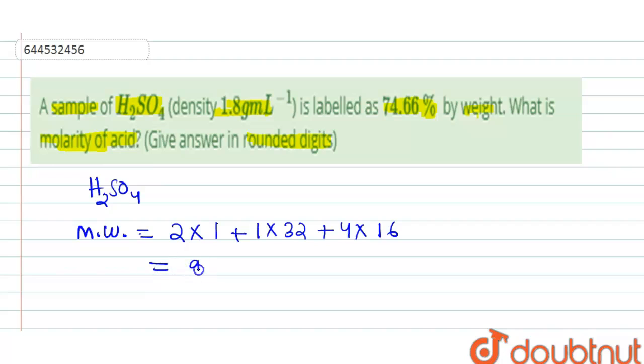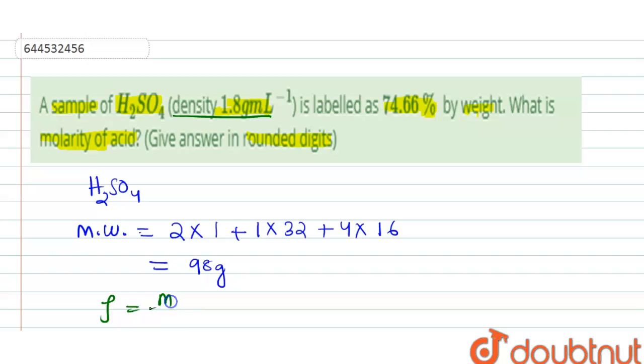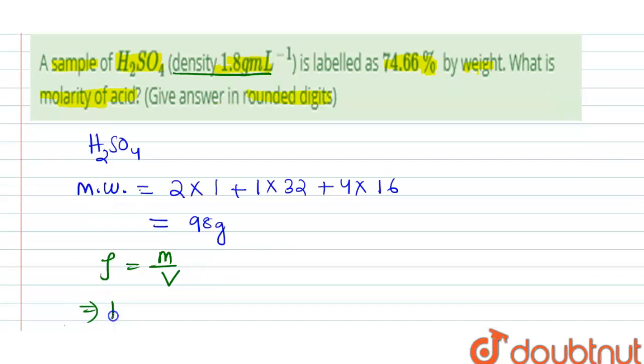Then it is said density is 1.8 gram per milliliter. We know density is equal to mass upon volume. That implies 1.8 is equal to mass divided by volume. Volume is given 1.8 liter.